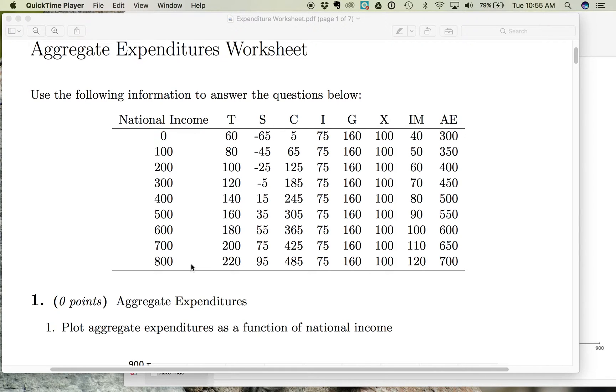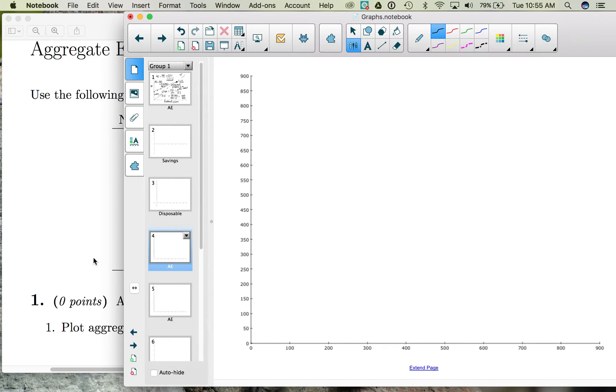As our income increases, consumption spending increases. So let's plot this information. We have national income on the horizontal.